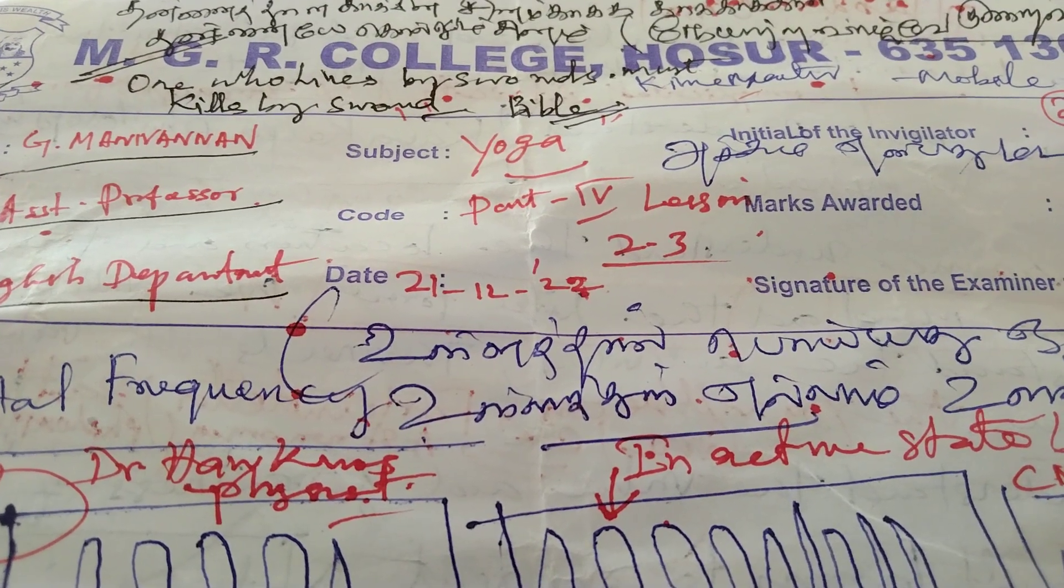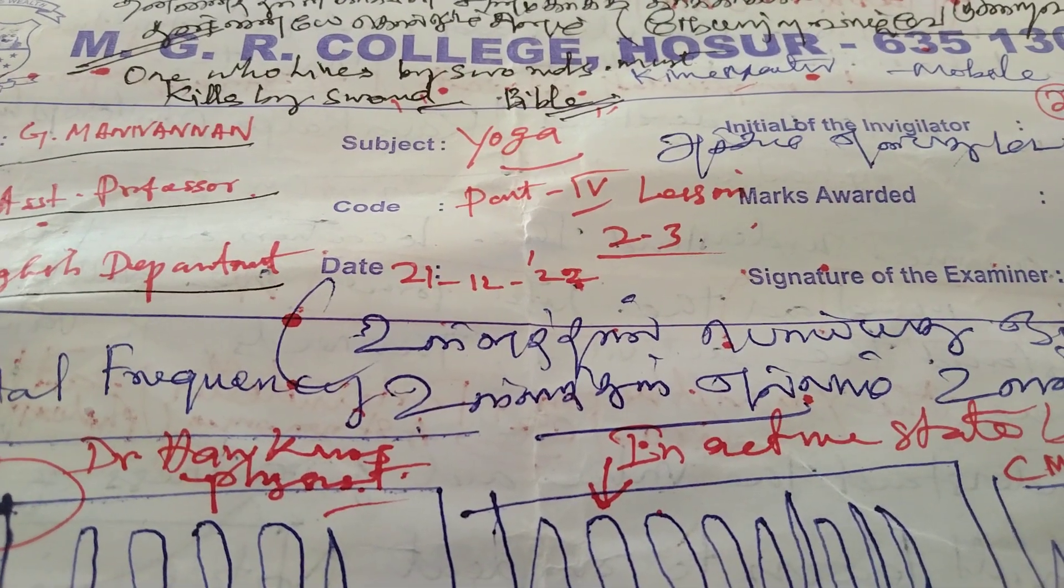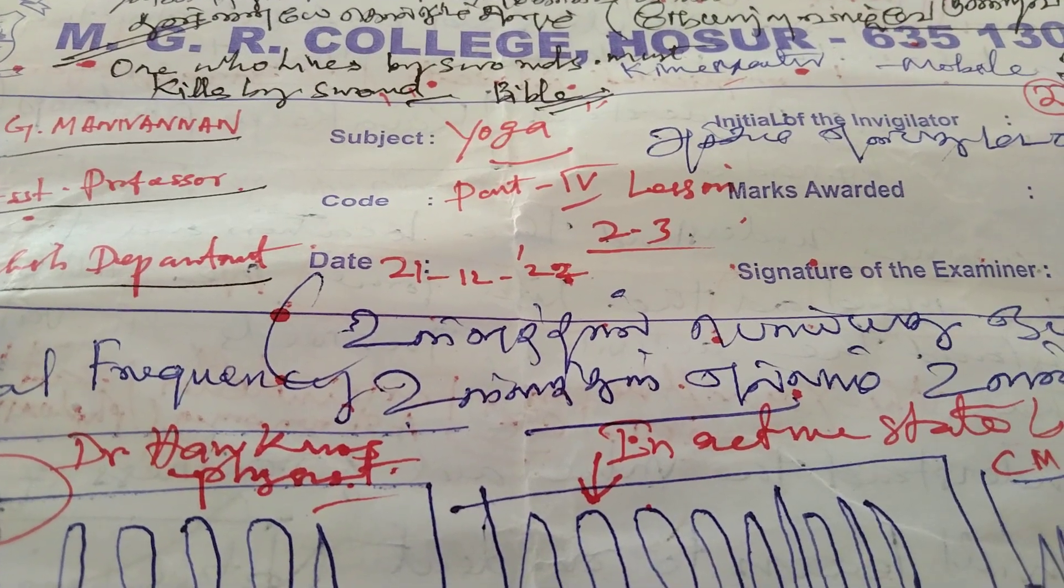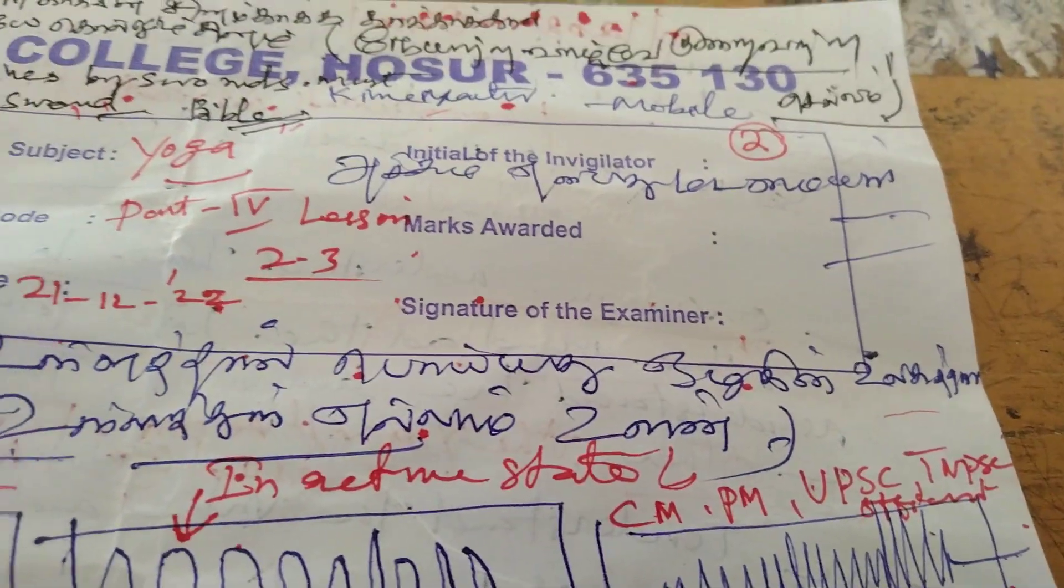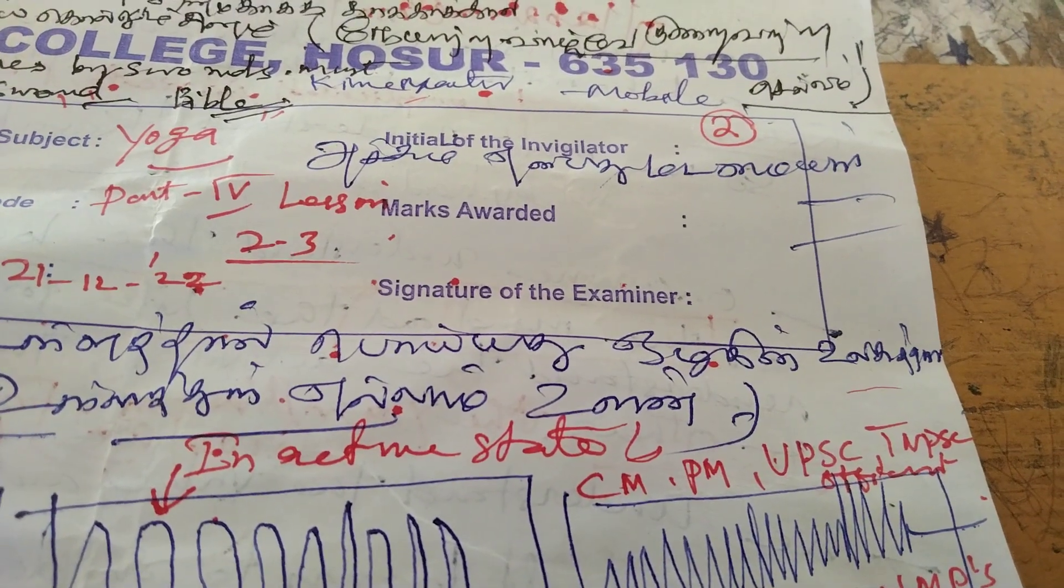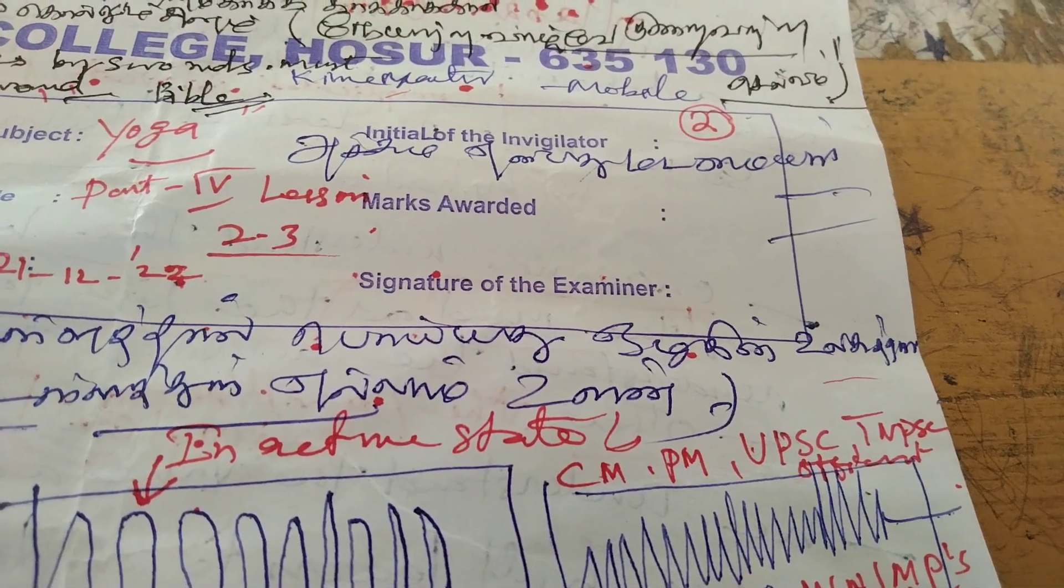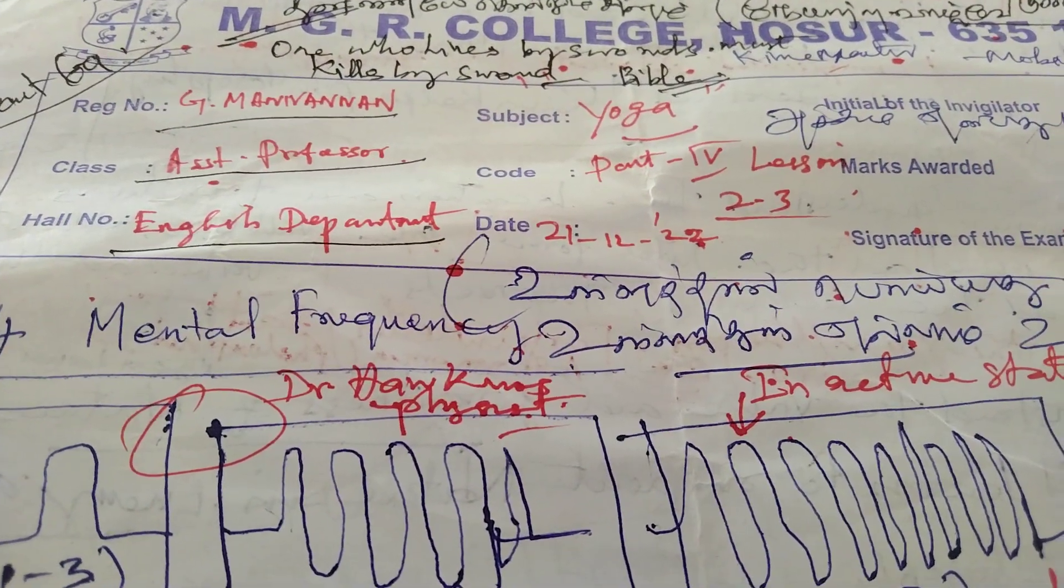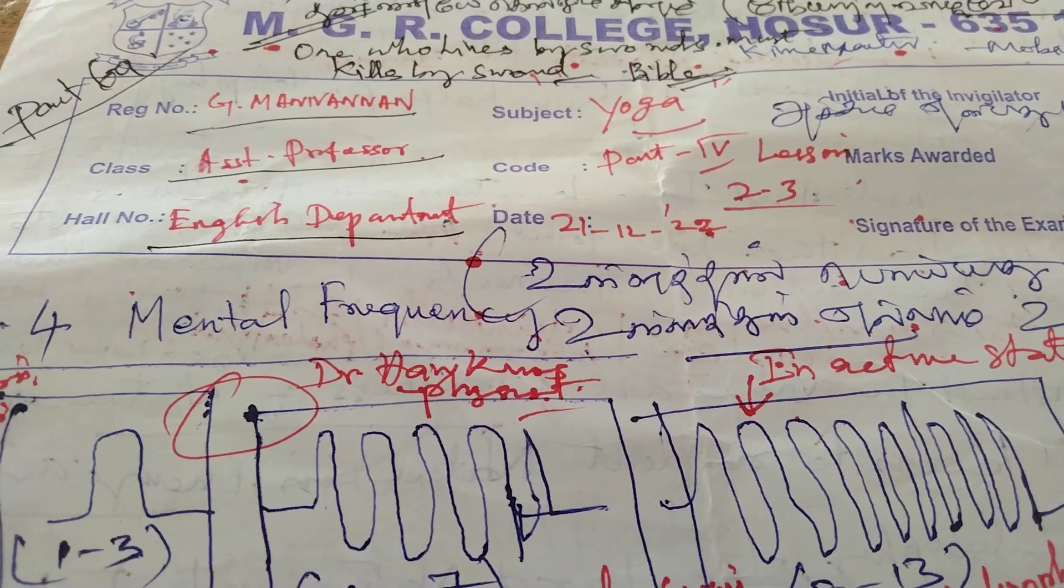If we have anger, definitely we will get lot of disease to our body. That disease will spoil our body and mind. That's why the great sayings of ancient people: accumulate wealth with good health. That is the real wealth to all people.